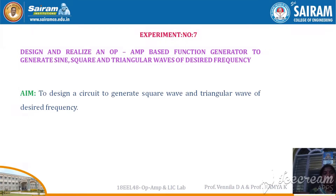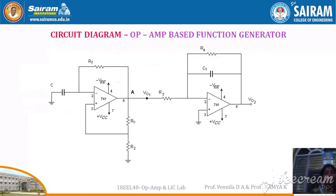The experiment number we are going to see is 7: Design and realize an op-amp based function generator to generate sine waveform, square waveform, and triangular waveform of desired frequency. The aim is to design a circuit to generate square waveform and triangular waveform of desired frequency. This is the circuit diagram of the op-amp based function generator.